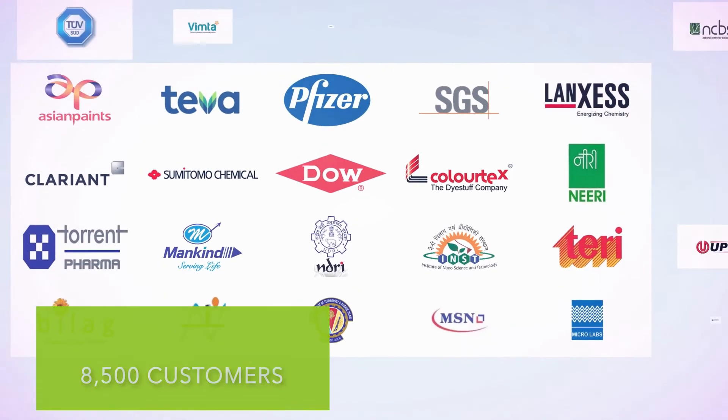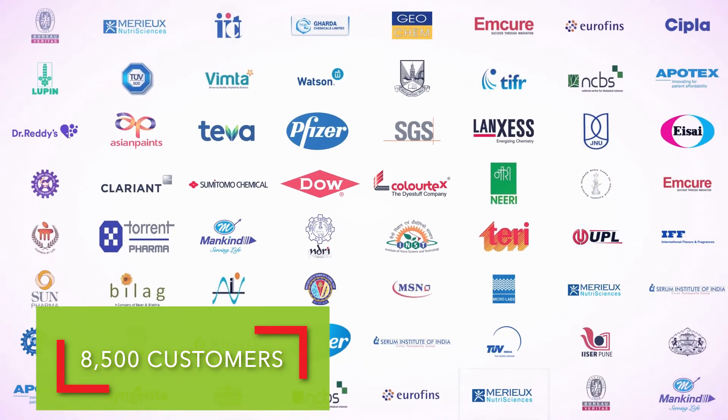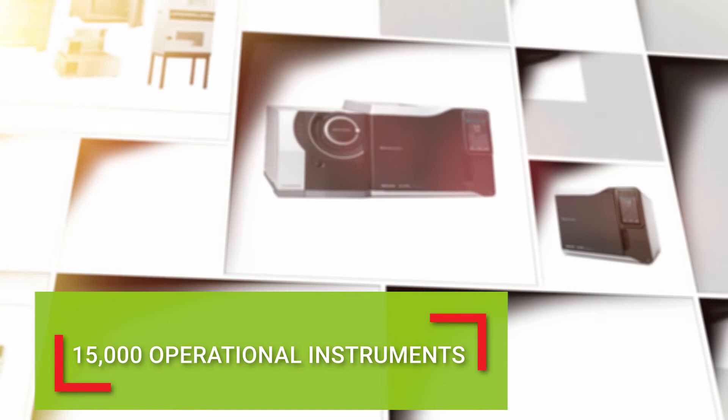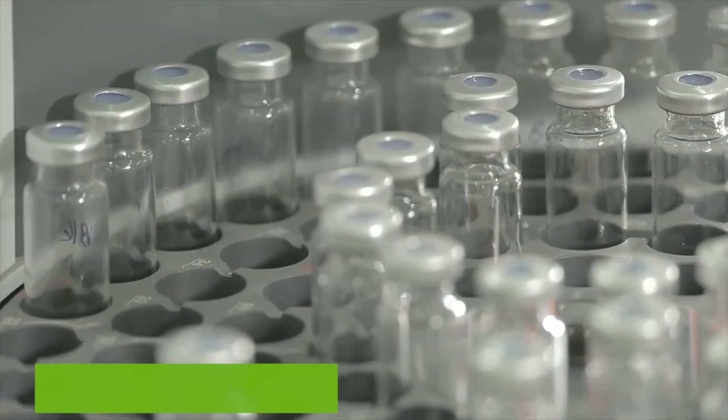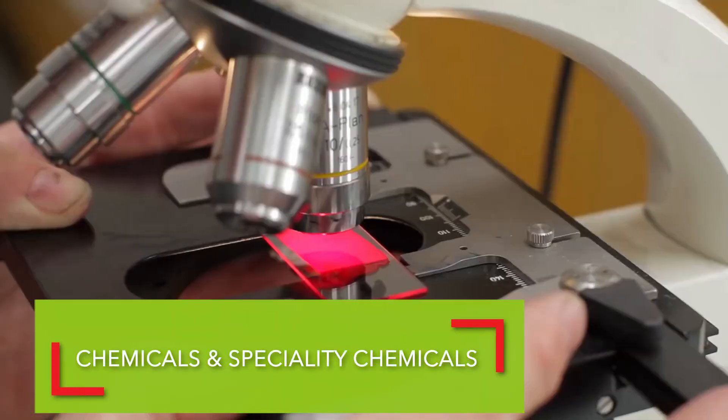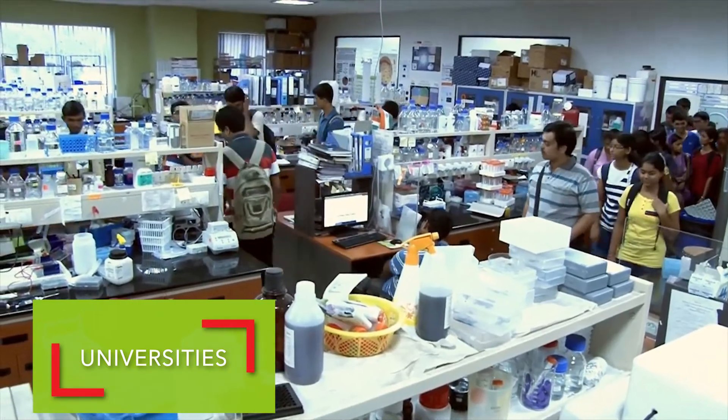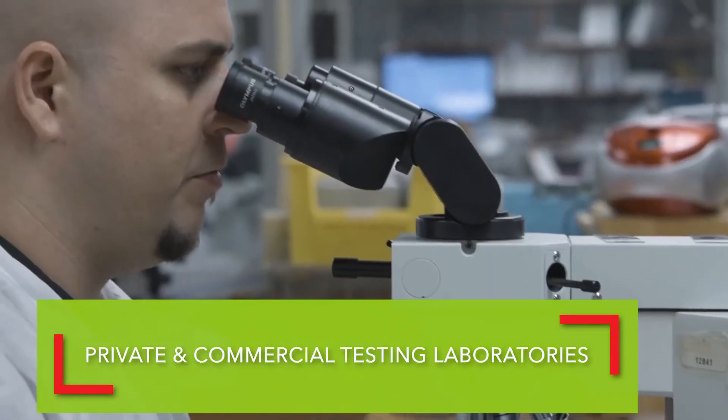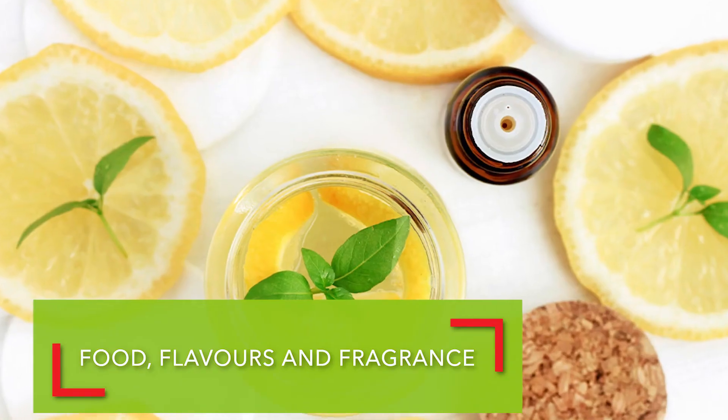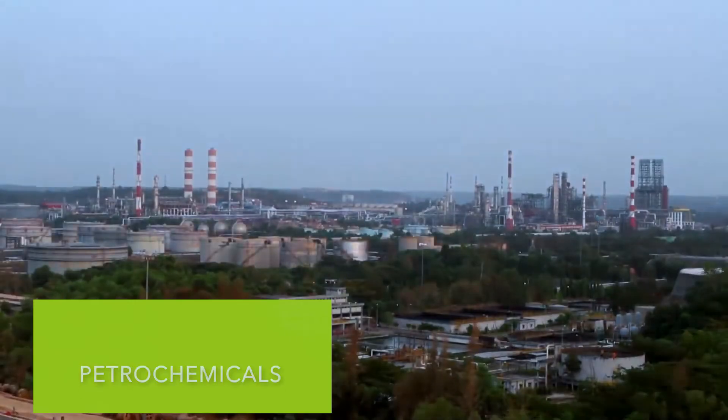Today, Toshven has over 8,500 satisfied customers and over 15,000 operational instruments installed across India catering to industries like pharmaceuticals, chemicals and specialty chemicals, universities, research institutes, private and commercial testing laboratories, food, flavors and fragrance, and petrochemicals.